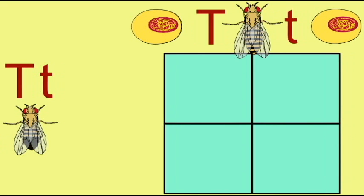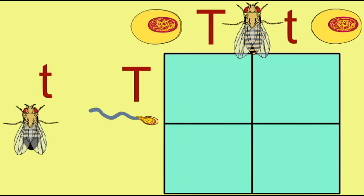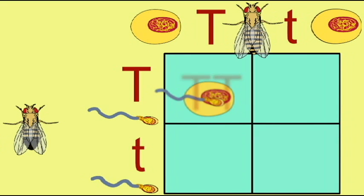A quarter of the offspring, on average, will result when a dominant allele-bearing sperm fuses with a dominant allele-bearing ova. These individuals will be homozygous dominant. Half of the offspring will be heterozygous,